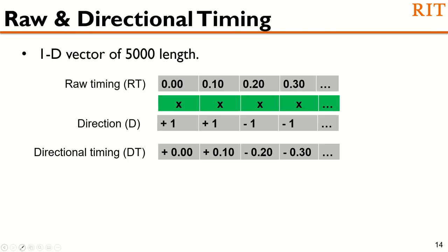We are also interested to investigate the performance of raw timing in a classifier, which we represent as a 1D vector of 5000 length, following prior work in this domain. We attempted a number of methods to combine both timing and direction information. Finally, we combine the raw timing and direction information by multiplying the timing with their associated direction, which gave us the directional timing. Directional timing is a representation of the timing information along with their associated directional sign, also represented as a 1D vector of 5000 length.